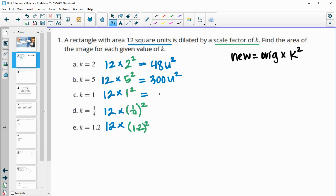This will be 12 times 1, so just 12 units squared since it didn't change in size at all. This one will be 12 times 1 fourth squared, which is really like dividing by 4 twice. And so this one as a decimal will give us 0.75 units squared.